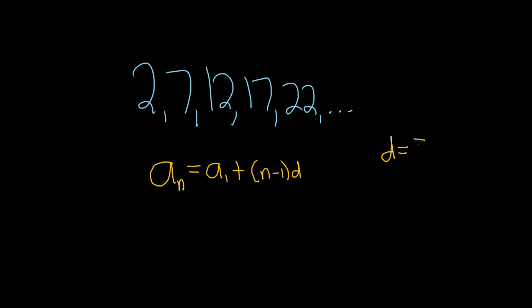Hence the name common difference. It's called a difference because if you subtract, if you do 7 minus 2, you get 5. 12 minus 7, you get 5. If you take any of these numbers and subtract the one before it, you're going to get this.